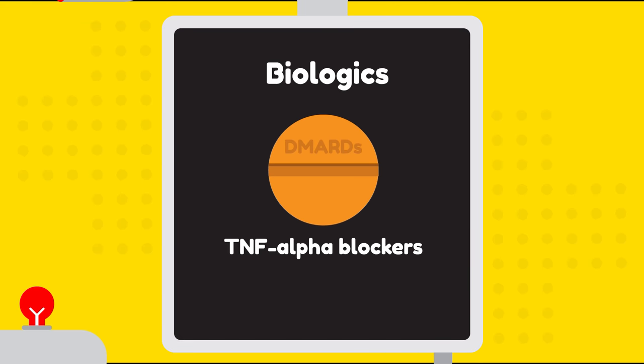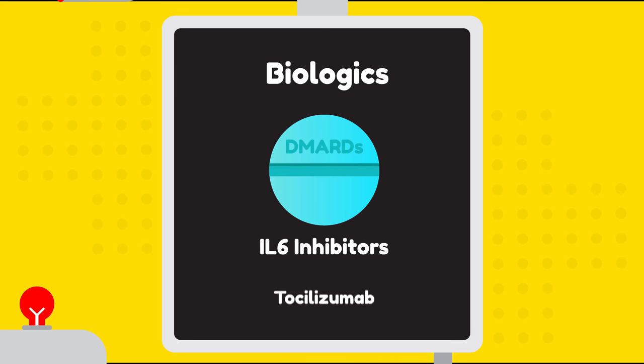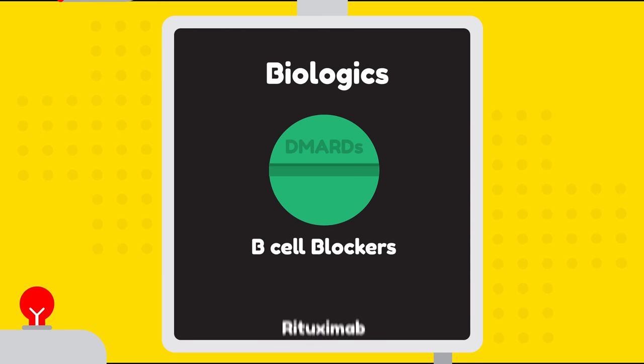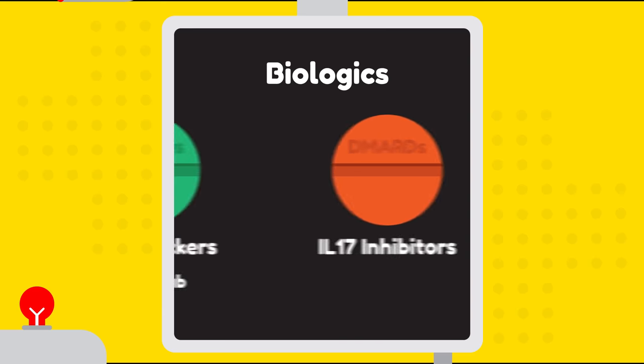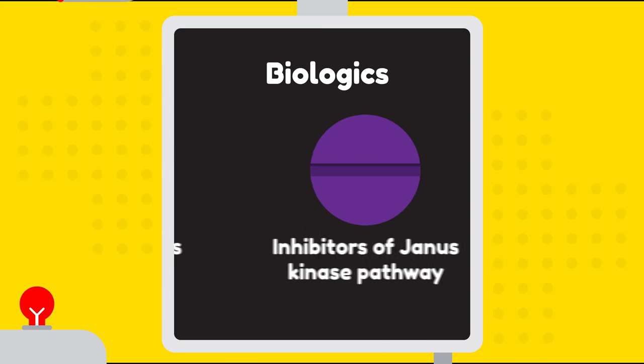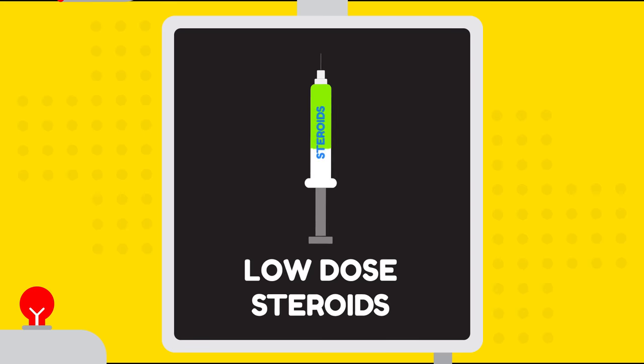Biologics: TNF-alpha blockers such as etanercept, adalimumab, etc. IL-6 inhibitors such as tocilizumab. B-cell blockers such as rituximab. IL-17 inhibitors like secukinumab. Inhibitors of Janus kinase pathway such as tofacitinib. Low-dose steroids.